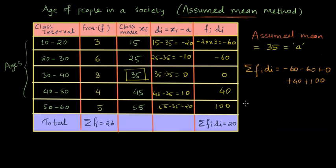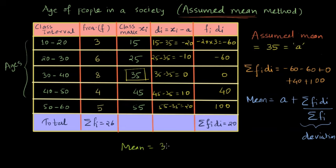Now I am ready to find the mean from assumed mean method. So the mean is found as A, which is the assumed mean plus summation fᵢ dᵢ divided by summation fᵢ. So basically we are adding some deviation term in the assumed mean from the data that we have. And we have already found summation fᵢ dᵢ which is 20 and summation fᵢ which is 26. So we can find the mean as A which is 35 here plus summation fᵢ dᵢ that is 20 divided by 26. And this gives me 35.77.